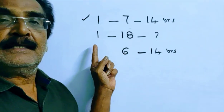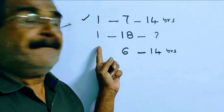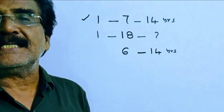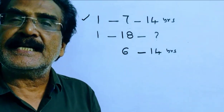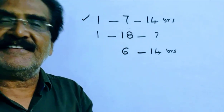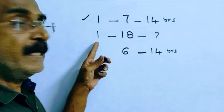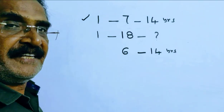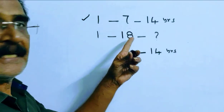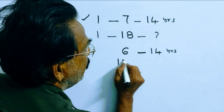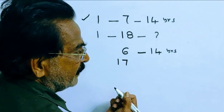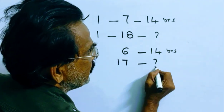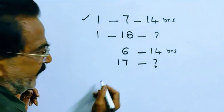Here, 1 becomes 18. 1 becomes 18 implies interest earned is 17 — 1 principal plus 17 interest equals 18. So to earn 17 rupees interest, how many years will it take?